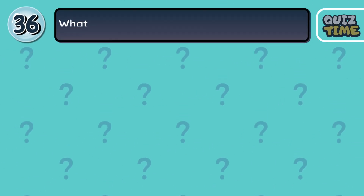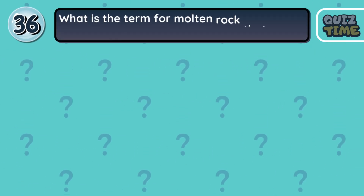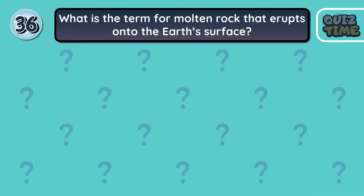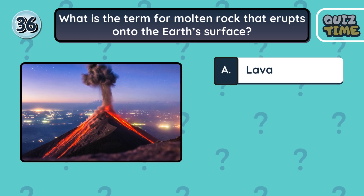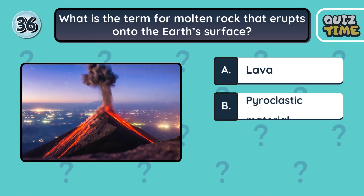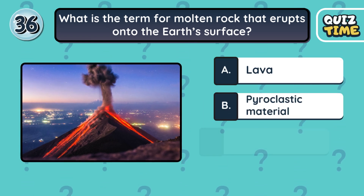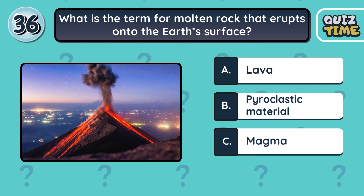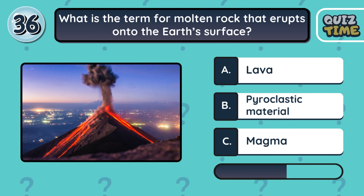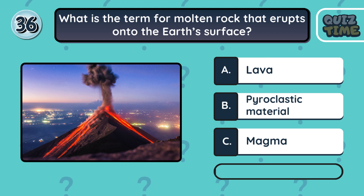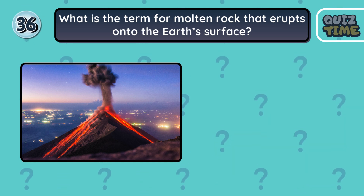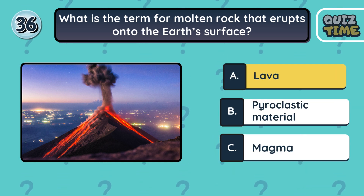Number 36. What is the term for molten rock that erupts onto the Earth's surface? A. Lava. B. Pyroclastic material. C. Magma. The correct answer is A. Lava.